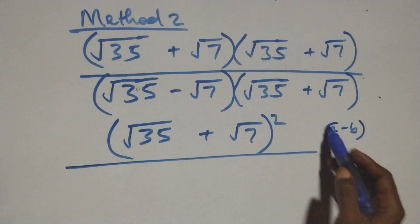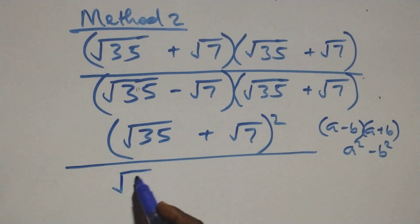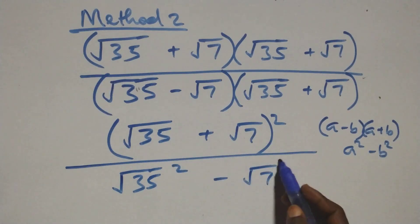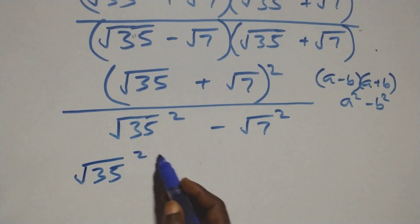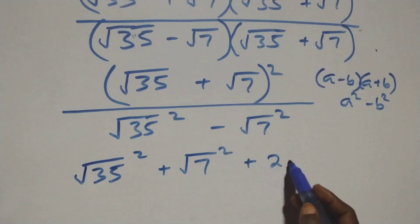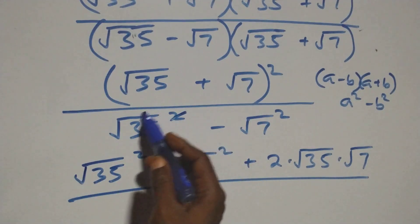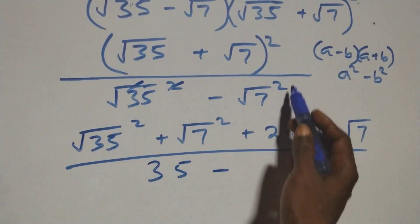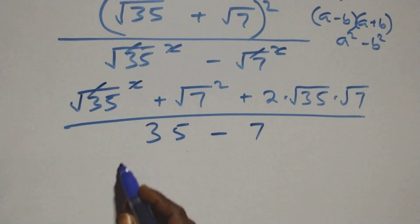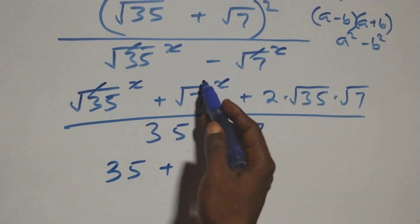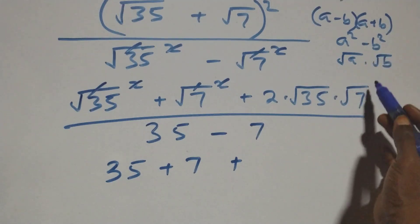The denominator follows the identity (a minus b)(a plus b) equals a squared minus b squared, so we get root 35 squared minus root 7 squared. The square and square root cancel each other, giving us 35 minus 7, which equals 28. For the numerator, we expand (root 35 plus root 7) squared, getting root 35 times root 35, which gives 35, plus root 7 squared which gives 7, and then the cross term.